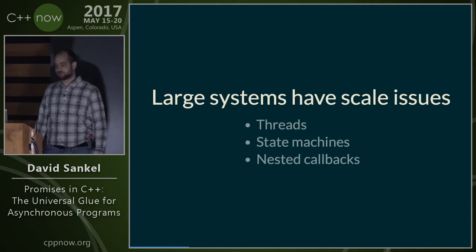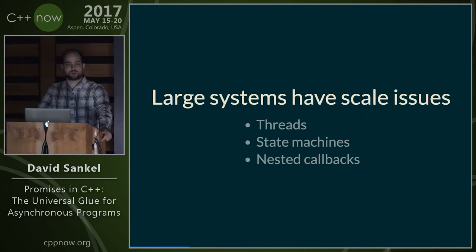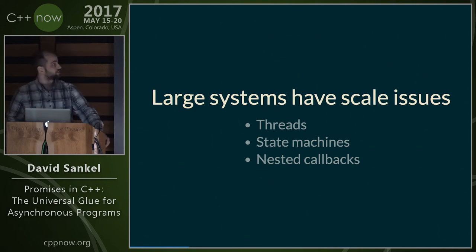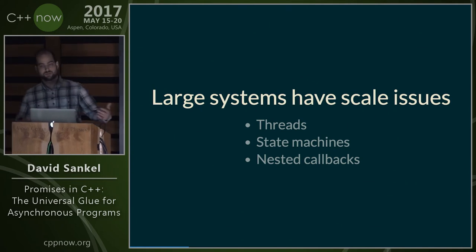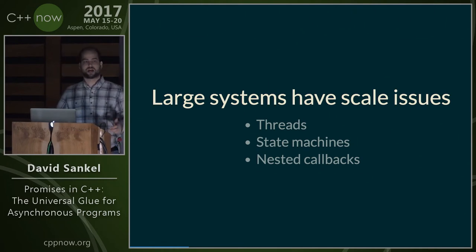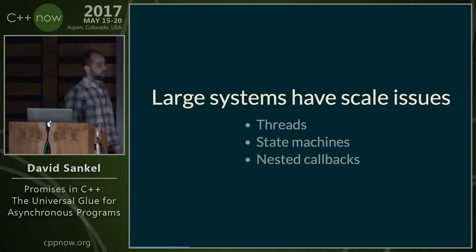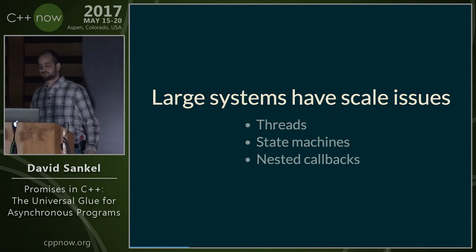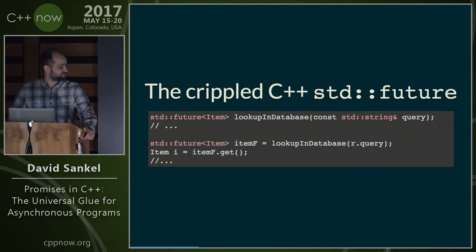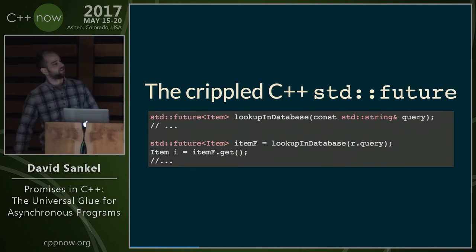All of these systems have issues when it comes to scale. With threads the problem is performance. With state machines and nested callbacks, the problem is the reasonability of the code — how quickly you can go in and make modifications. A lot of the program logic gets hidden behind syntax and nesting. So maybe we could use std::future? My comment: it's crippled.